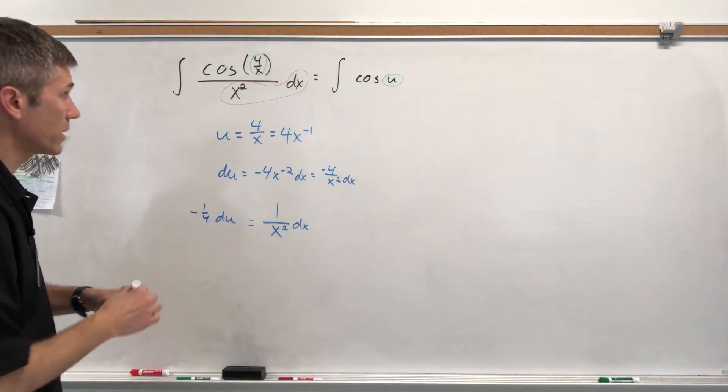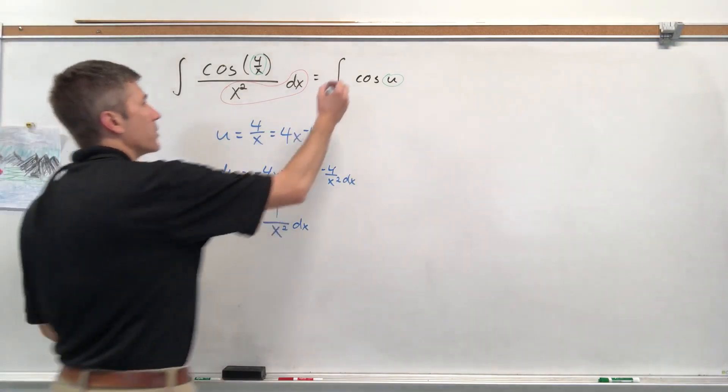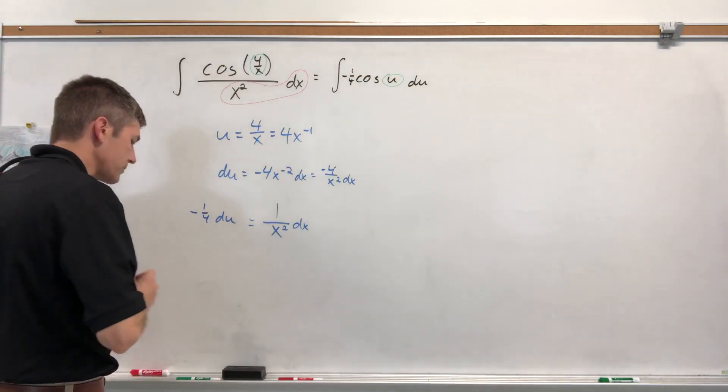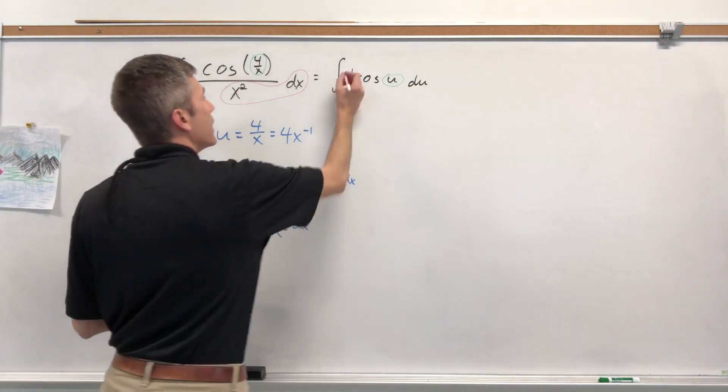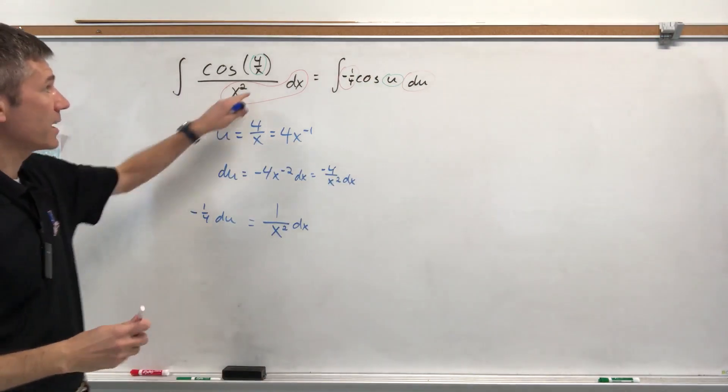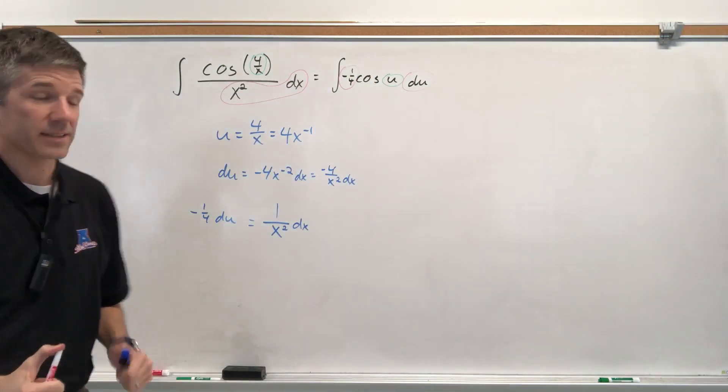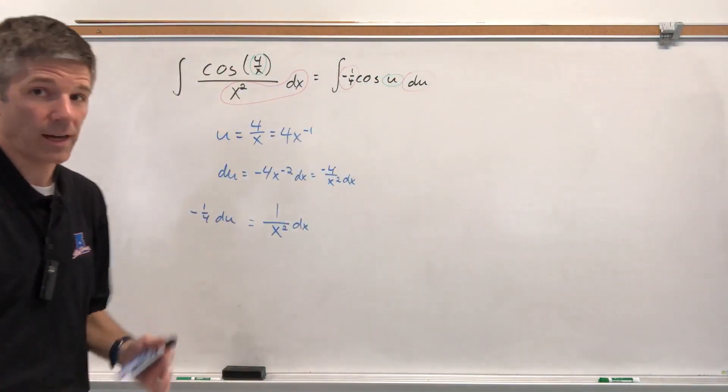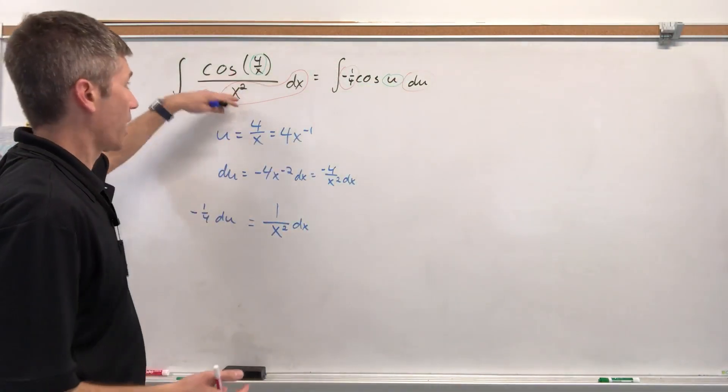Okay. Let's do a little more rewriting here. So negative 1 4th DU. And that right there is X squared in the denominator DX. Now, if you're looking at this and saying, how did you turn it into that? And really your question might be, where did your denominator go?